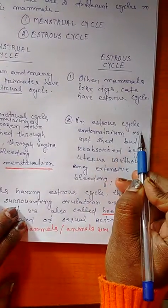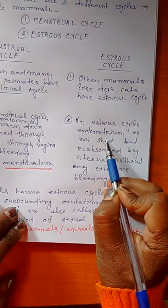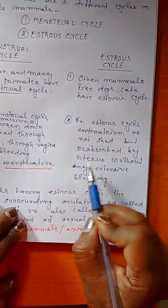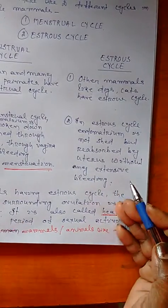Next, in the estrous cycle, the endometrium is not shed but reabsorbed by the uterus without any extensive bleeding.